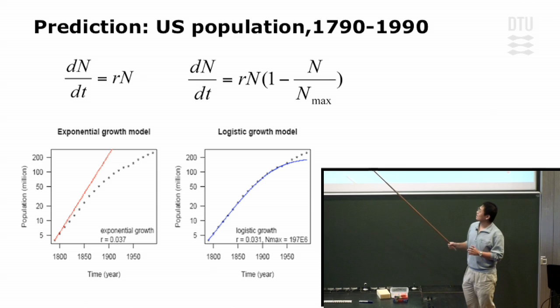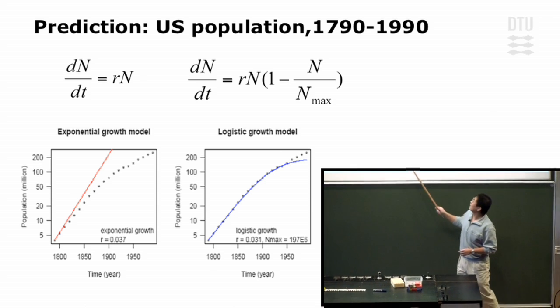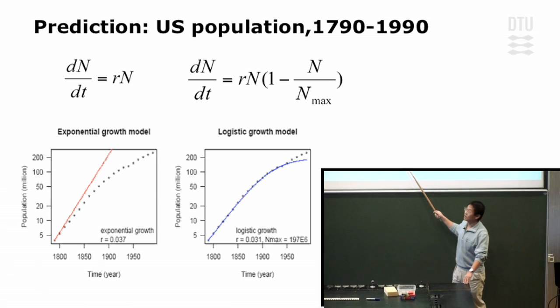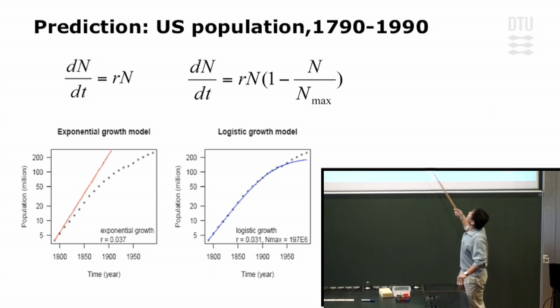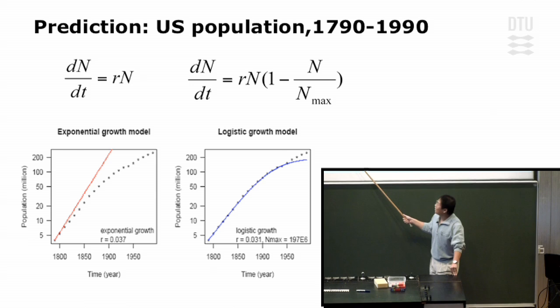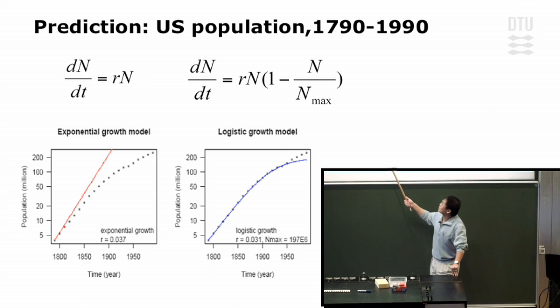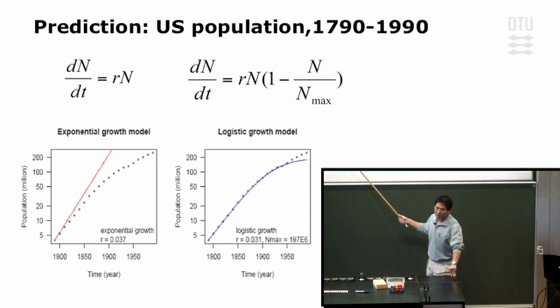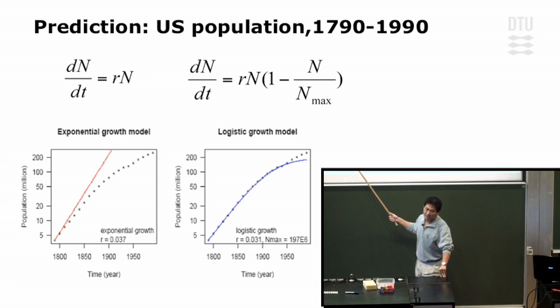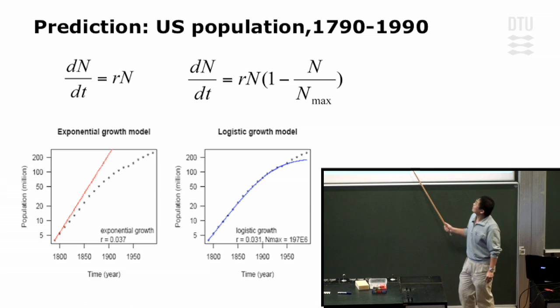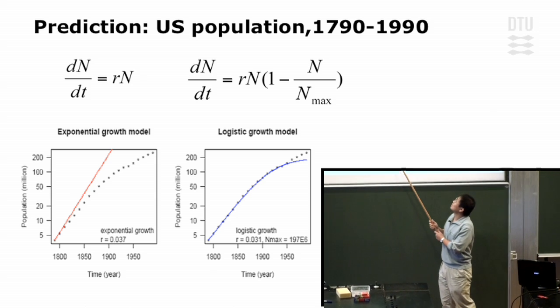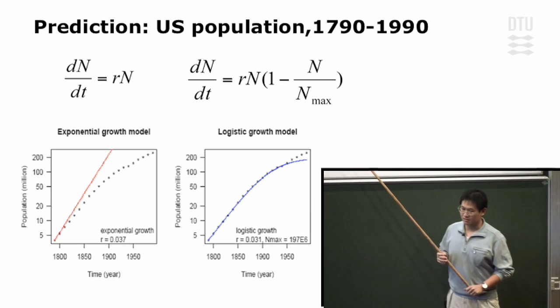Let's skip the math part, just to show you the predictions made by these two models and fitted to the actual population quantified between those 200 years. In the left panel, what you can see is for the first 20 years, the exponential growth model predicts nicely the actual population in that country. But after that, the predicted value and the actual population start to deviate. Whereas in the right panel, you can see the logistic growth model fits nicely to the actual population. So why does this logistic growth model give better prediction, as you can all see here?